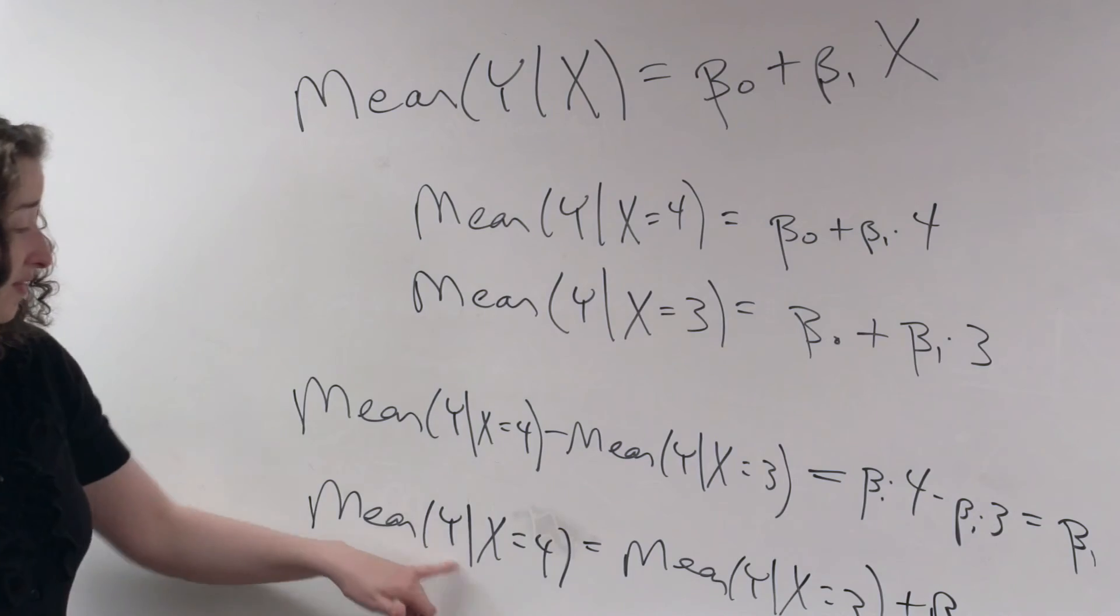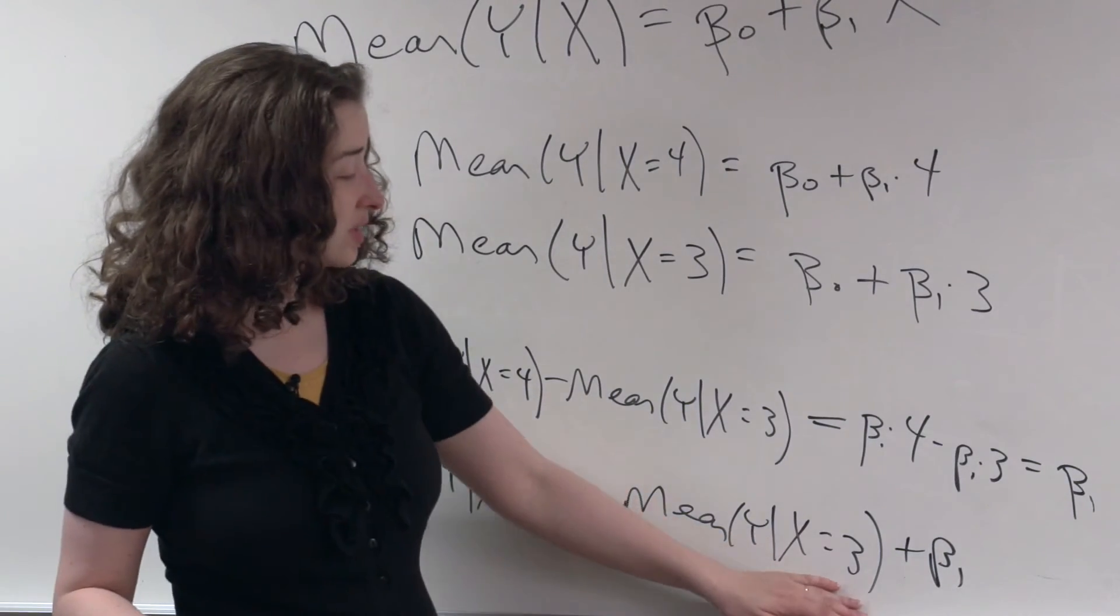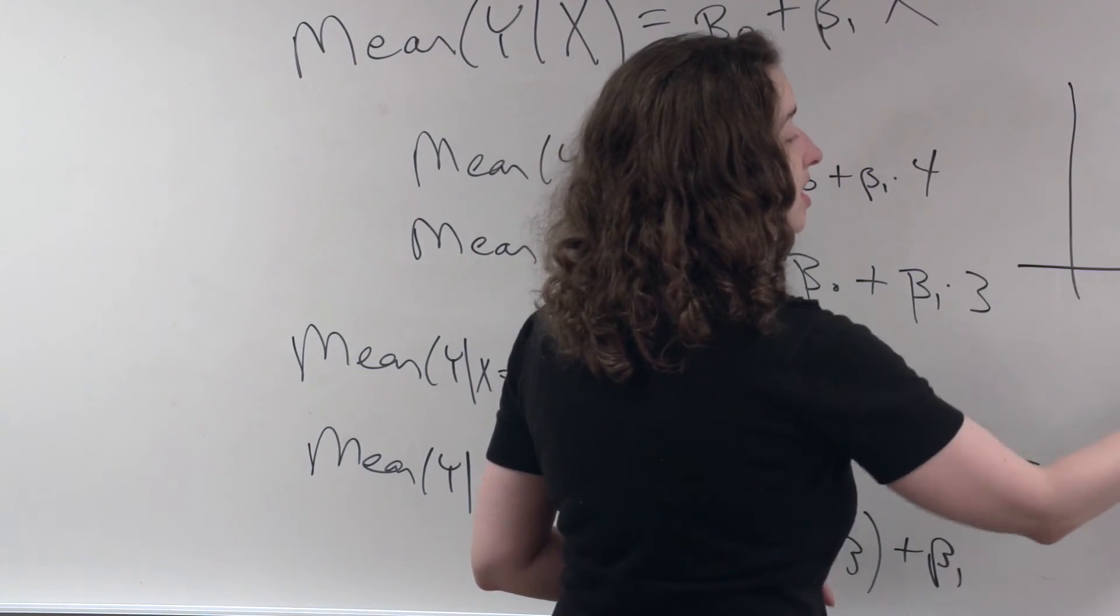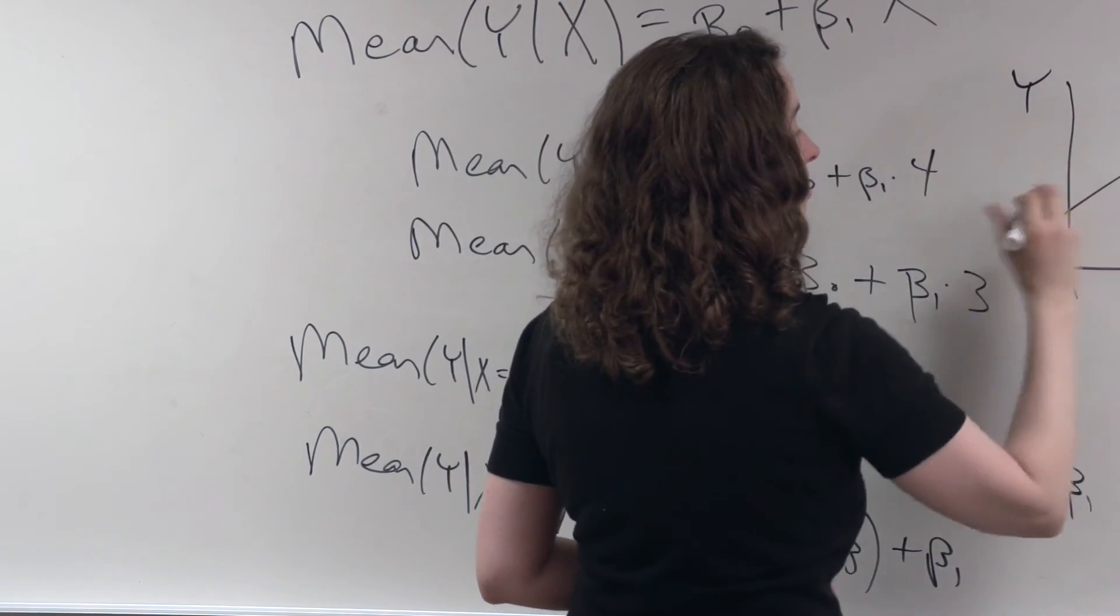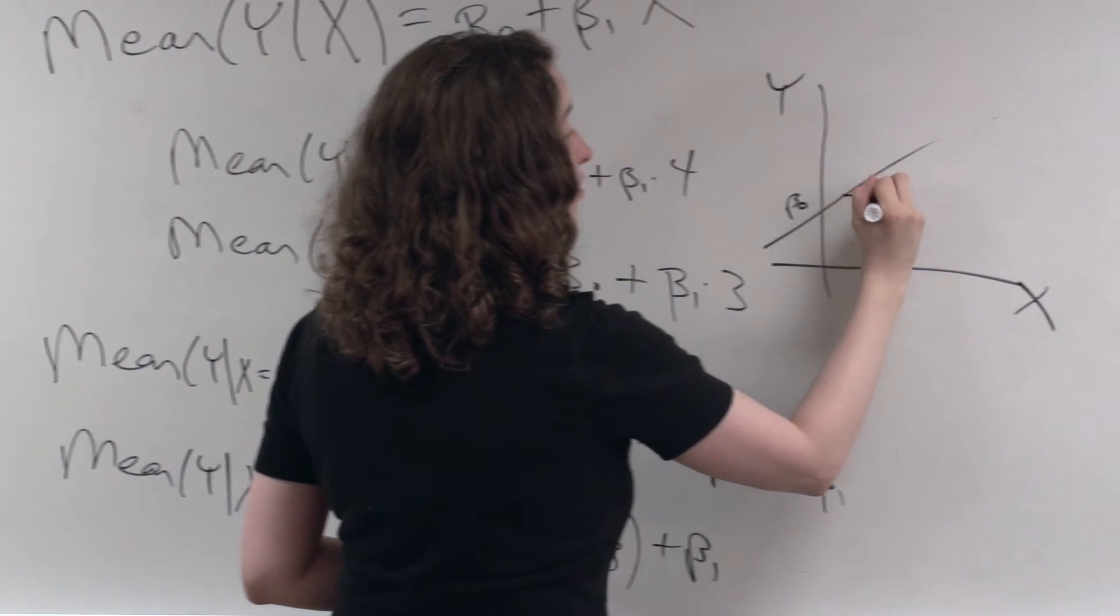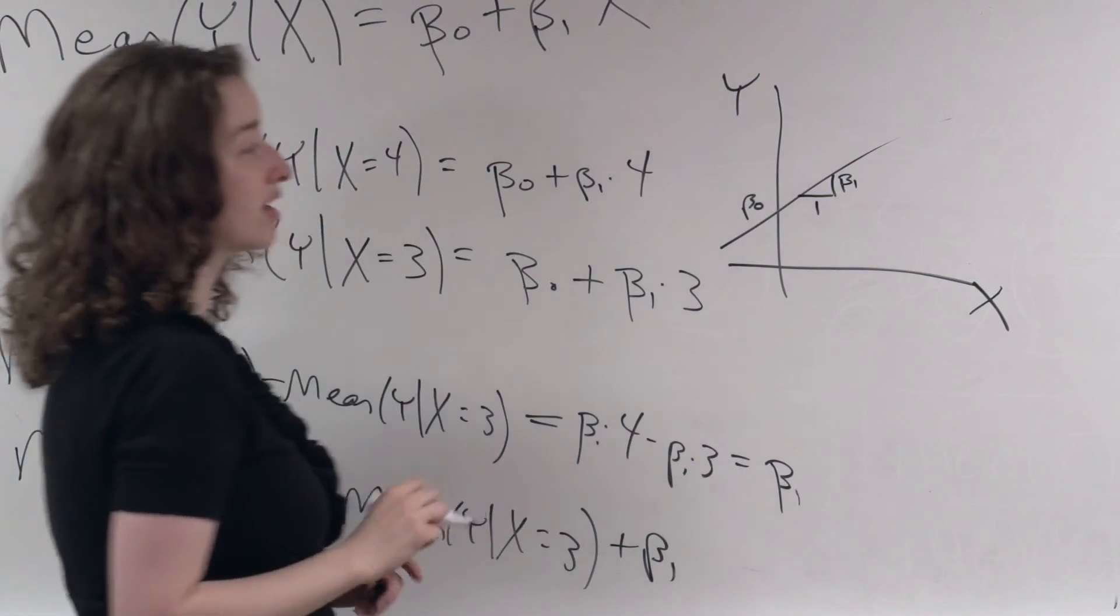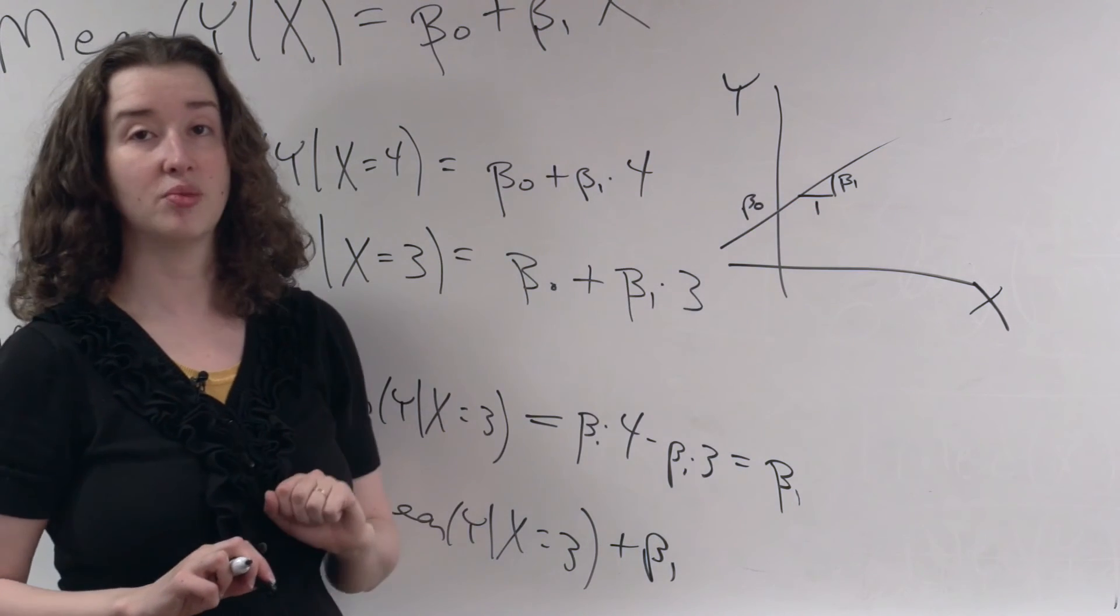To get to the mean of Y when X is equal to 4, we take the mean of Y when X is equal to 3 and we add beta 1. And this is exactly what you'd think when you interpret a slope anyway. When X goes up by 1, the mean of Y goes up by beta 1. That's what a slope is.